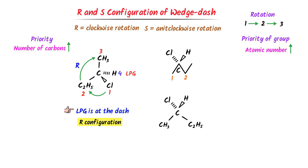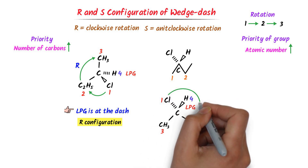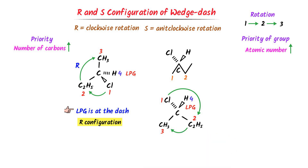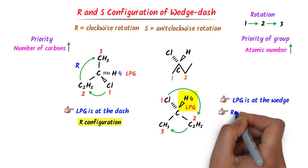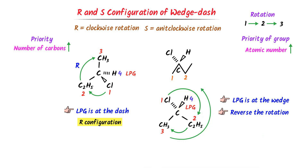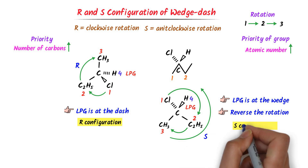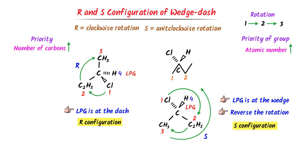According to the rule, chlorine is given first priority. Then the second priority is given to ethyl because it has more carbon atoms than methyl. The third priority is given to methyl, and hydrogen is LPG. Now I go from first to second, then second to third — this is clockwise rotation or R configuration. But wait — LPG or hydrogen is present at the wedge. Since hydrogen is present at the wedge position, we reverse the direction. So this organic compound has S configuration. Thus using this easy method, we can easily assign R and S configuration to any wedge-dash structure.